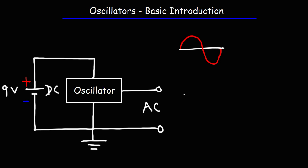With non-sinusoidal outputs you can get the triangle wave, you could also get a square wave, and you can also get the sawtooth wave.